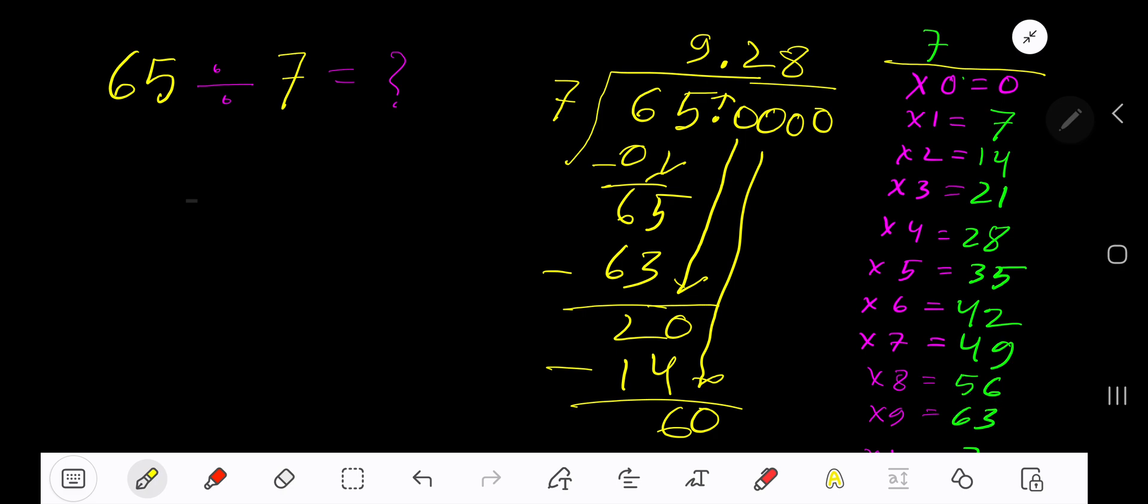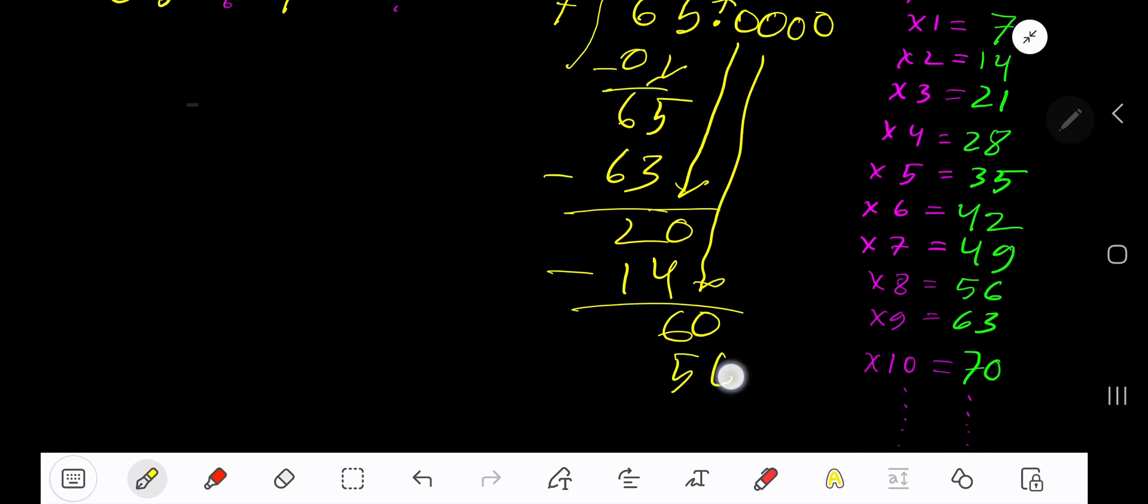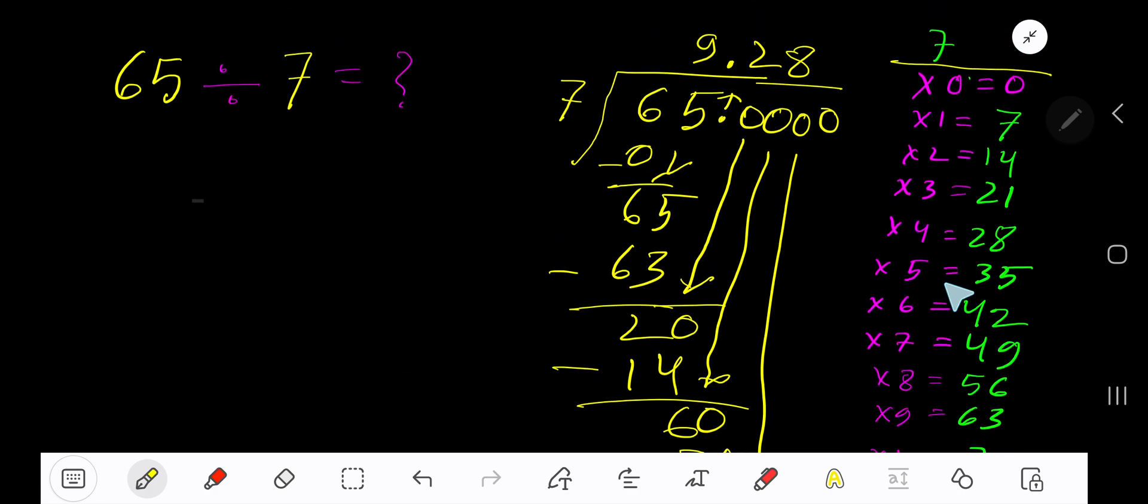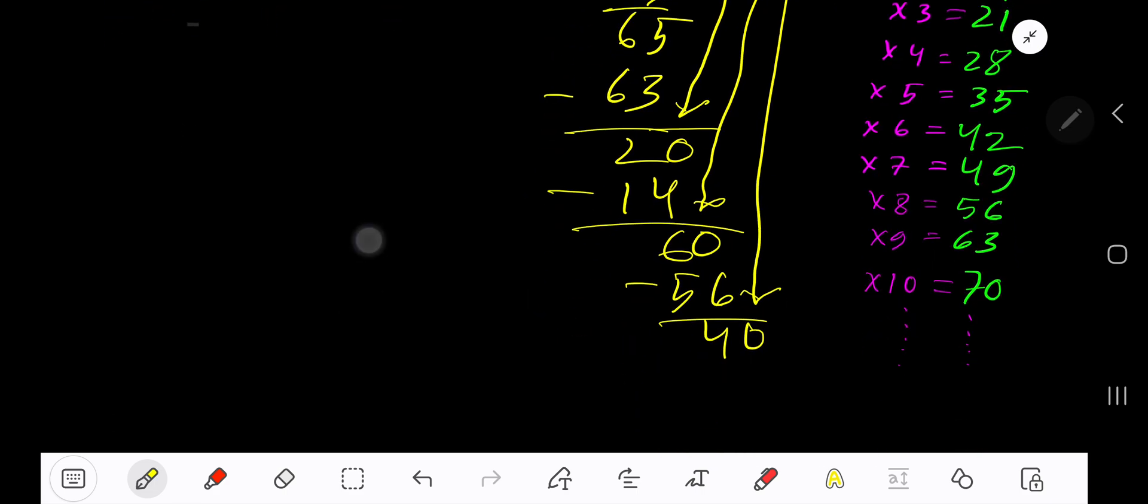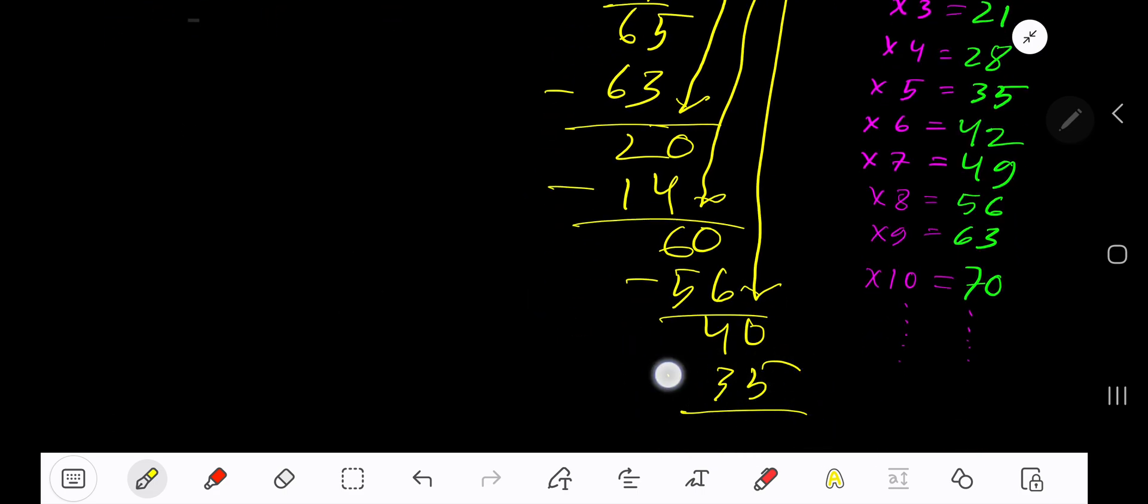8 times 7 gives you 56. Subtract, you are getting 4. Bring down another 0. 7 goes into 40 how many times? 6 times 42, which is greater, so 5 times. 5 times 7 gives you 35. Subtract to get 5.